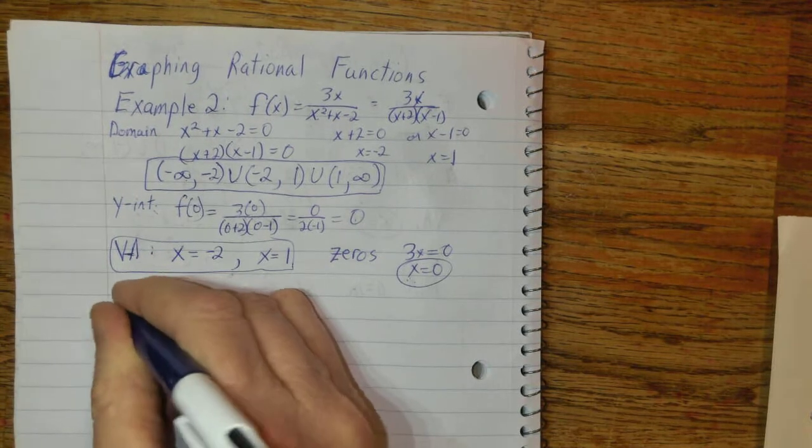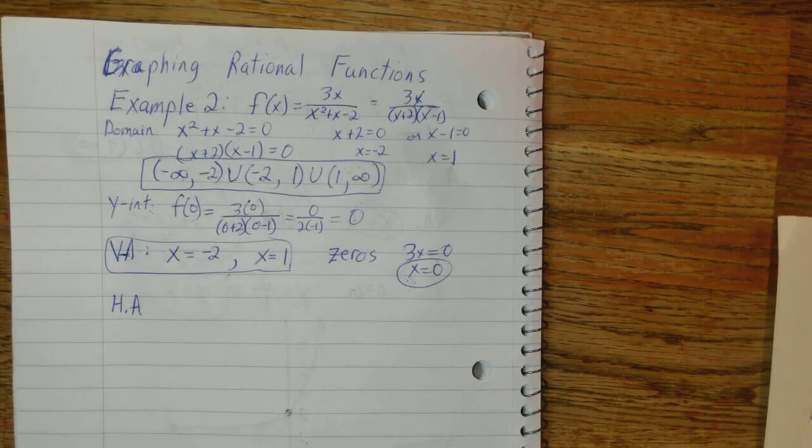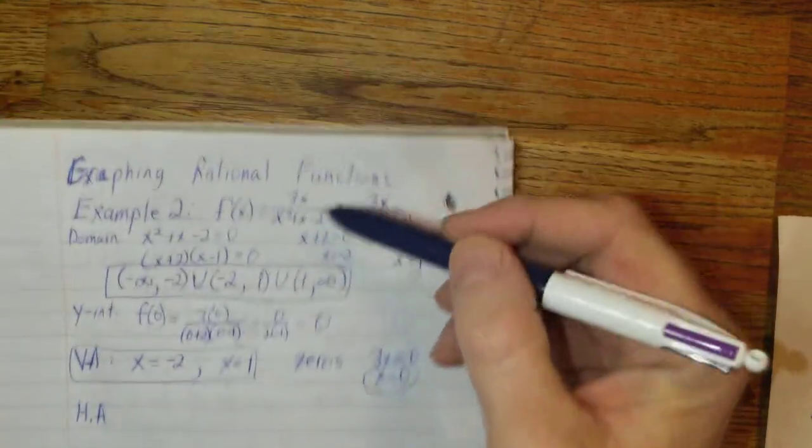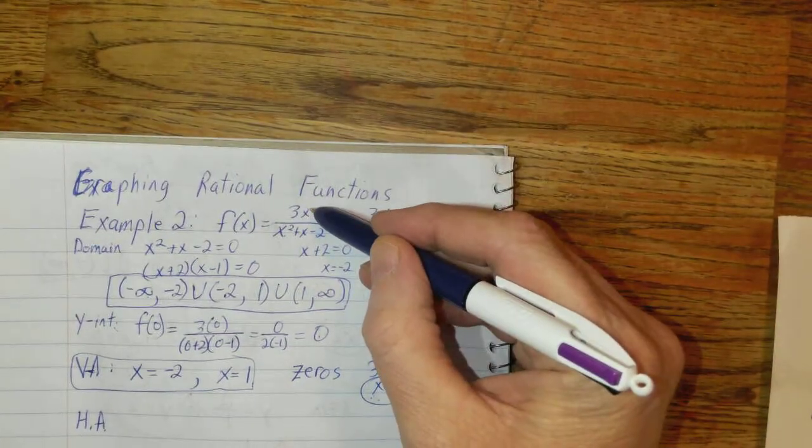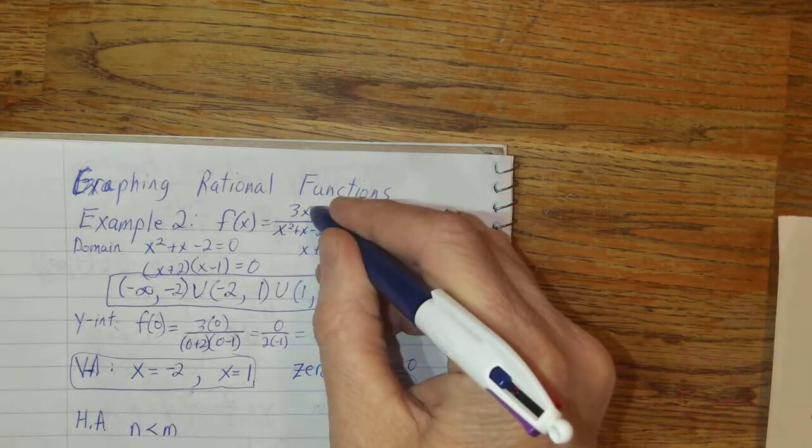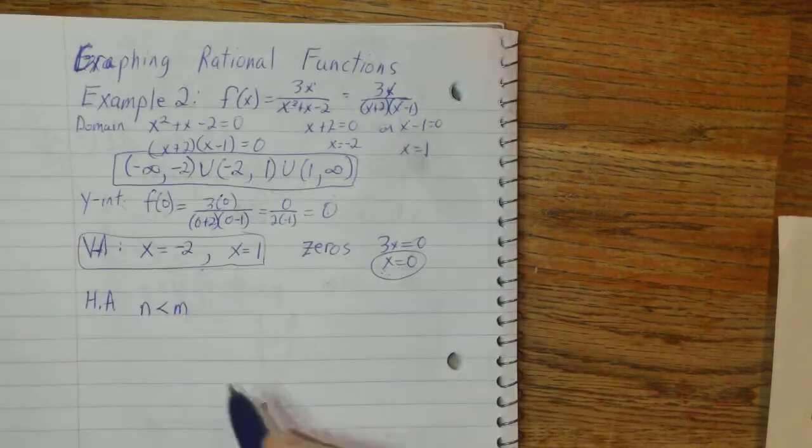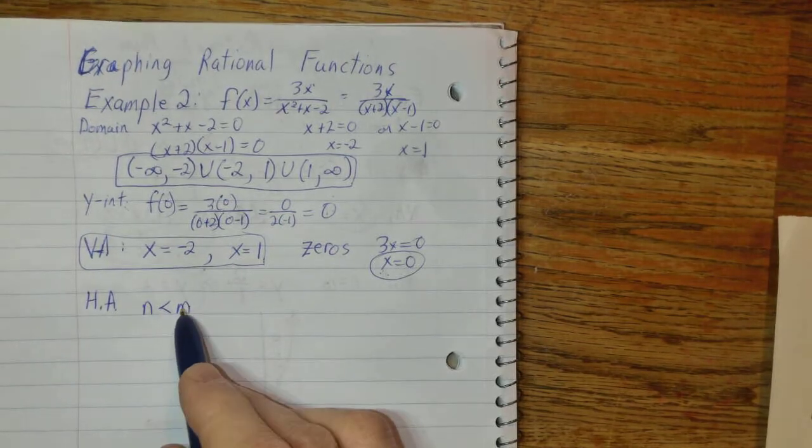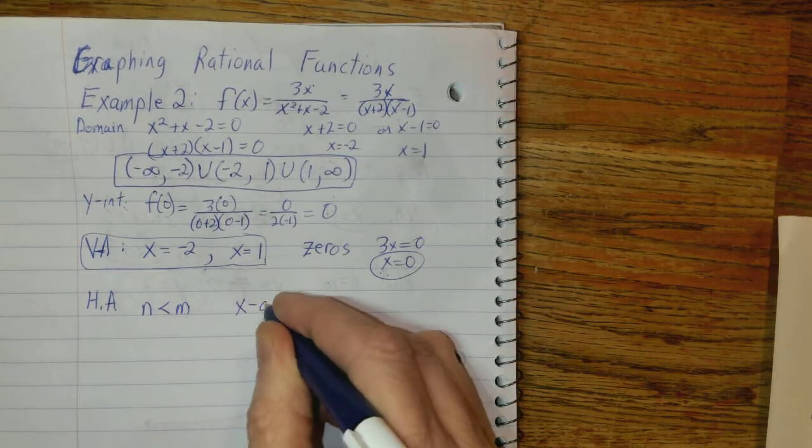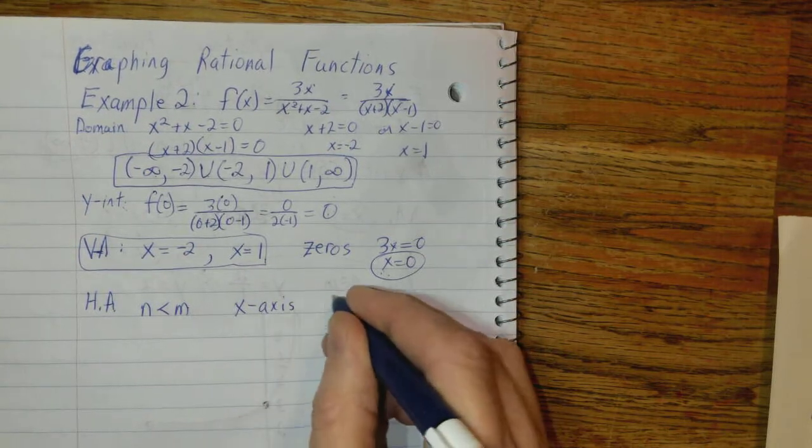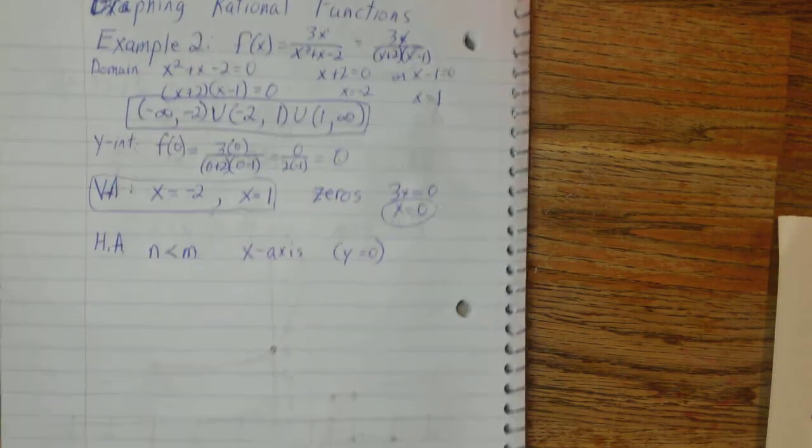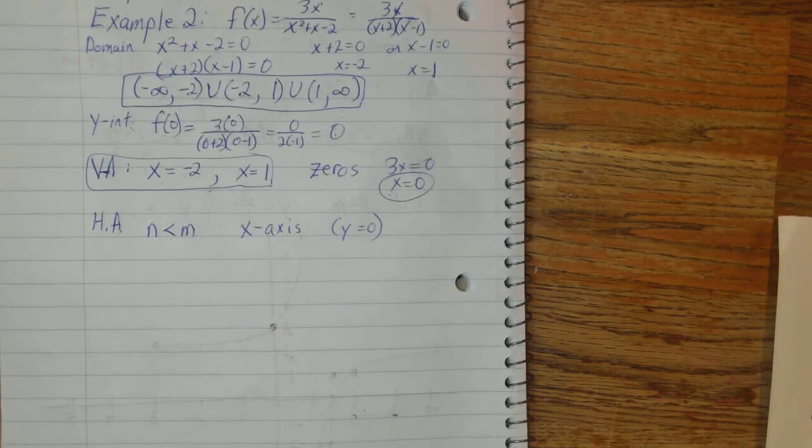Now, horizontal asymptotes. This is a case where the degree of the numerator is less than the degree of the denominator. The degree here is 1. The degree here is 2. When that is the case, then the horizontal asymptote is the x-axis. Also known as y equals 0 in the equation.